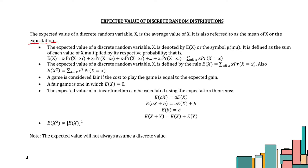The expected value of a discrete random variable is denoted by E(X) or the symbol mu. It is defined as the sum of each value of X multiplied by the respective probabilities. The rule is the summation of all X, or the product of X multiplied by the respective probability.